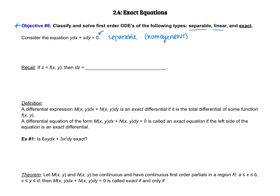Taking a look at this equation, what I want you to notice is on the left side — like we saw in the last video — that is the derivative of the product of x and y. So what we can do, like we did before, is we can integrate. So we get x·y is equal to c, and that is our solution.